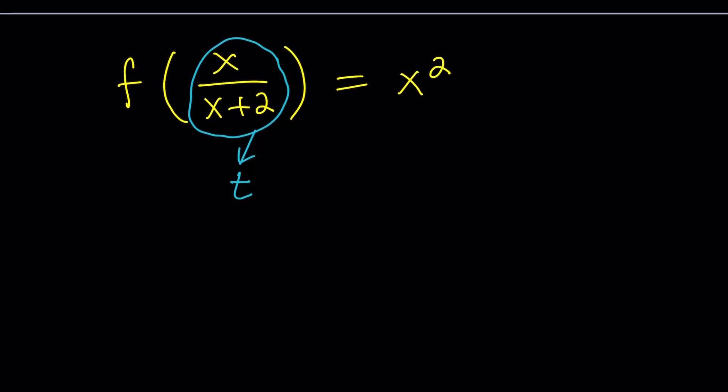Anyways, so let's see what happens. Set x over x plus 2 equal to t. Alrighty. And then here's what we're going to do. We're going to solve for x. So let's cross multiply. x equals x t plus 2t. 2t or not 2t, that's the problem.